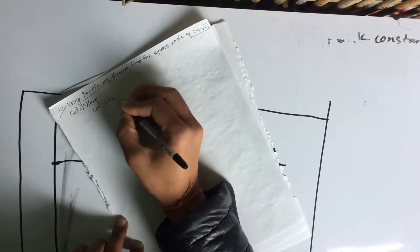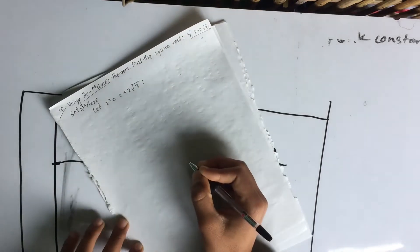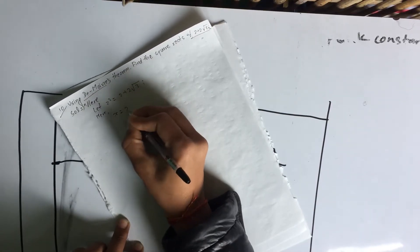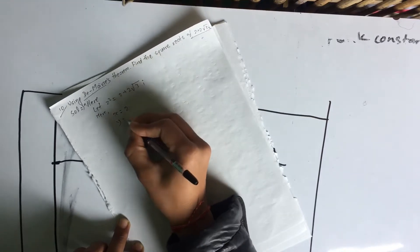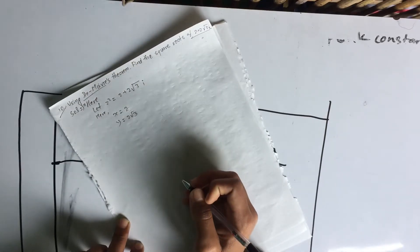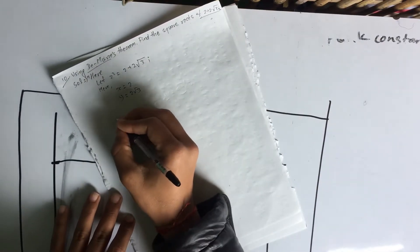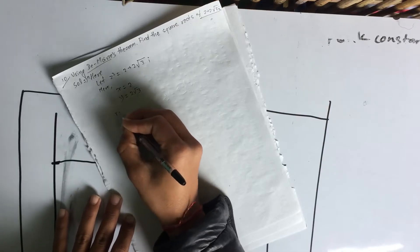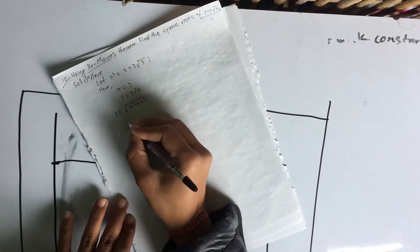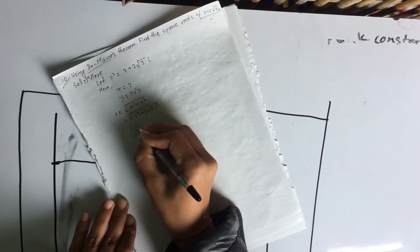Let's do this. So, z squared is equal to 2 plus 2√3i. Here, x equals 2 and y equals 2√3. I will convert the complex number to polar form. R equals the square root of x squared plus y squared.